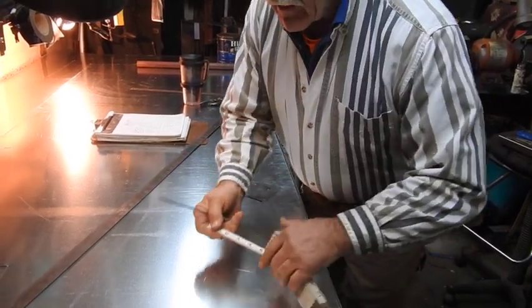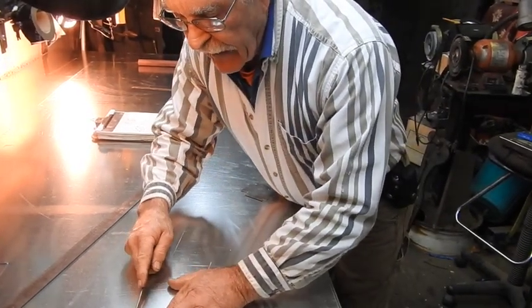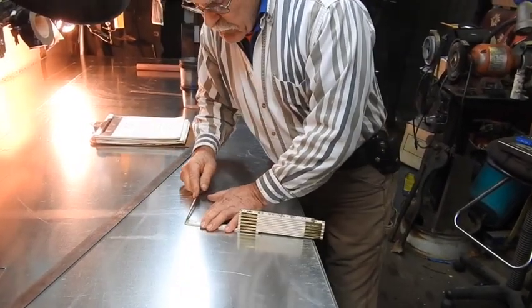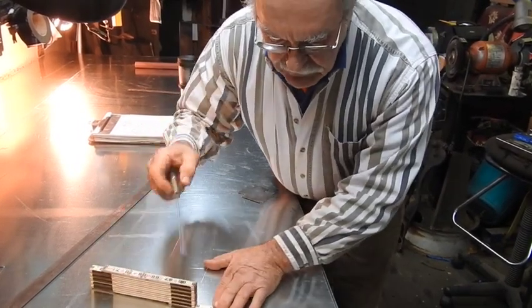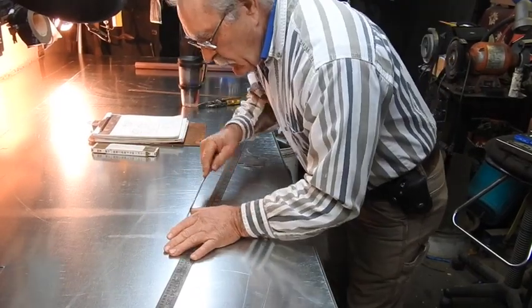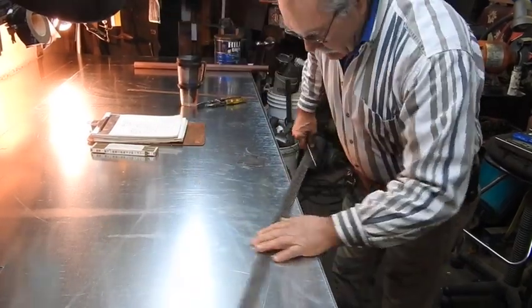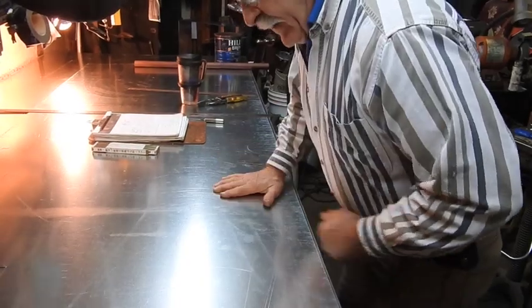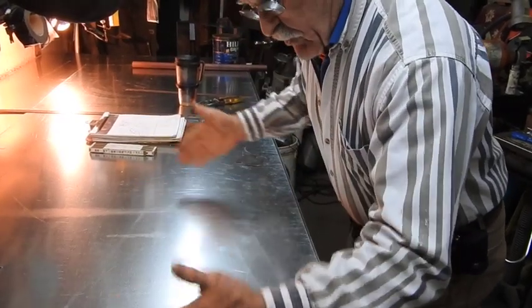Now for the quarter inch bend, we have to add a quarter inch to that angle and this angle. Ten by eight, four and a half inches up, twenty-four inches long.